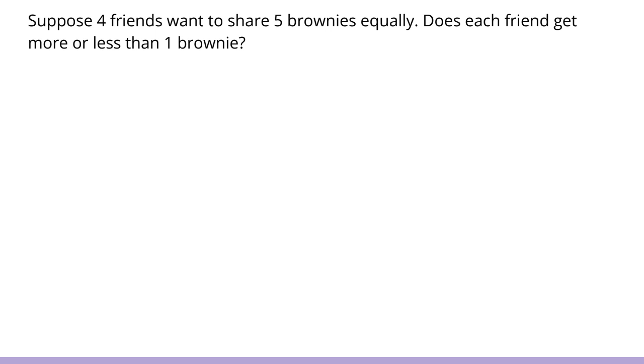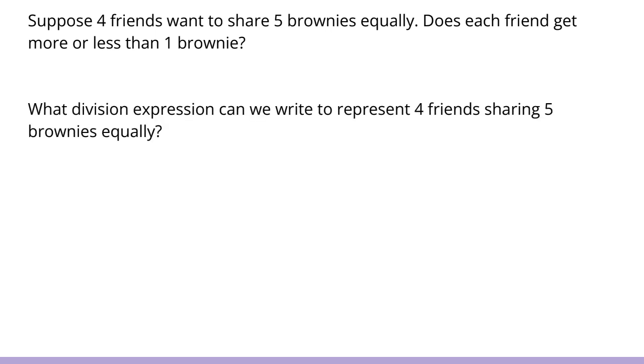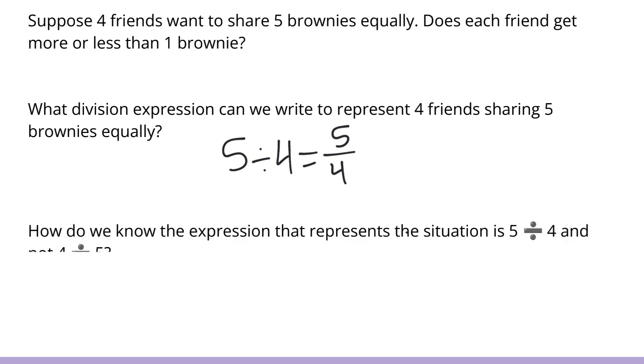What division expression can we write that would represent four friends sharing five brownies equally? Well, we have five brownies, we have four friends. So that would be 5 divided by 4 gives us 5 fourths. Now, how do we know that this equation is 5 divided by 4 and not 4 divided by 5? Well, we have to always think about what is the whole amount that we are dividing. In this case, we are dividing 5 brownies divided by 4 people. So it has to be 5 divided by 4.